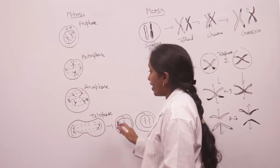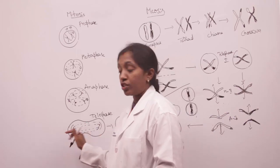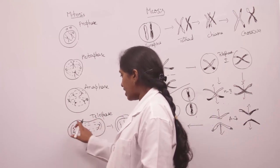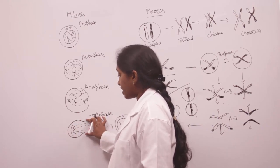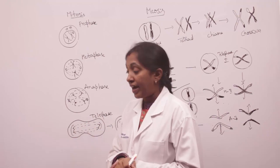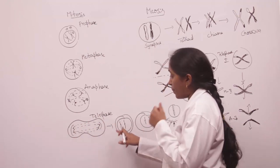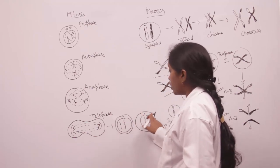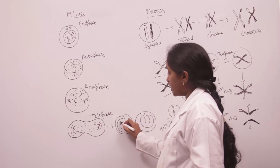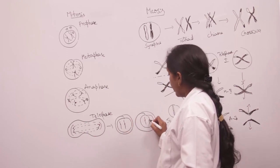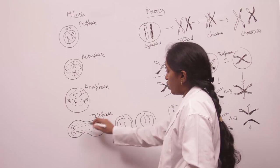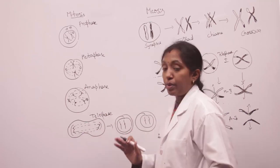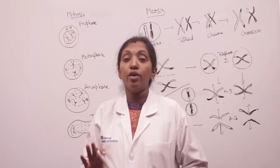Coming to the telophase, the non-sister chromatids reach the opposite ends of the poles. The cell membrane starts constriction and begins dividing. After the telophase, the cell membrane divides into two and the nuclear membrane is also formed. These cells carry the same diploid number of chromosomes.